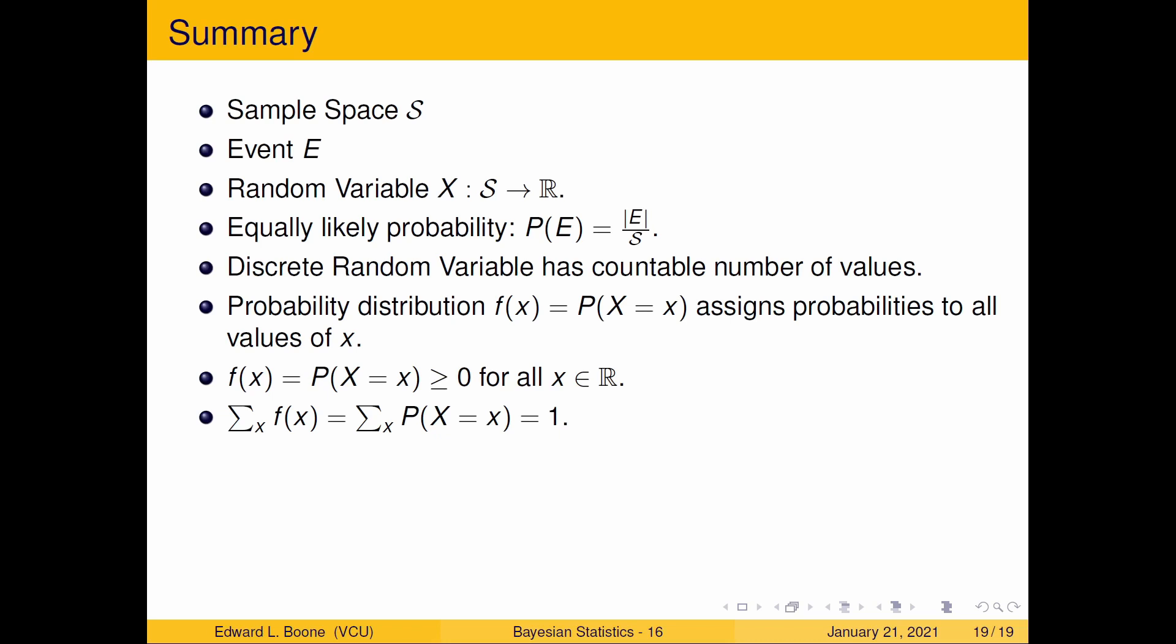Boy, we've covered a lot already. And so we have a sample space, we have an event, we have a random variable that just assigns the numbers to our outcomes. So we have an equally likely outcome type idea. We have discrete random variable. It has a countable number of values. A probability distribution here assigns probabilities to all values of X. And here we have some properties of it. Now in the next video, we're going to consider continuous random variables where things change up a little bit. But we'll worry about that then. So see you there.